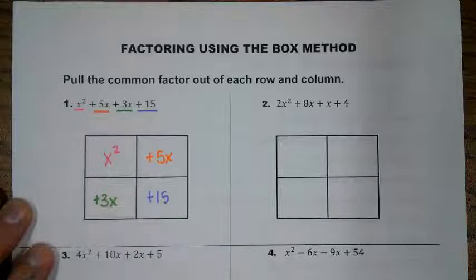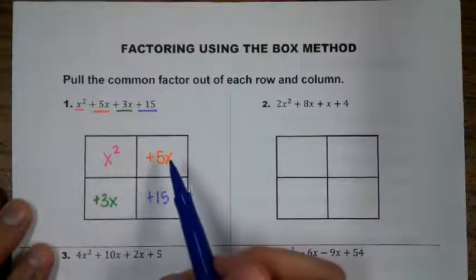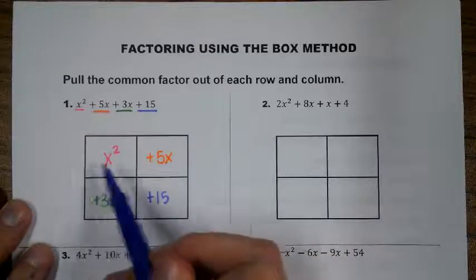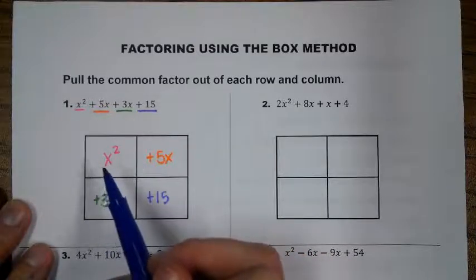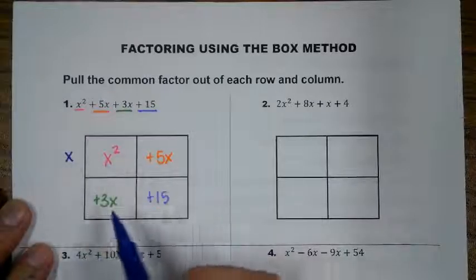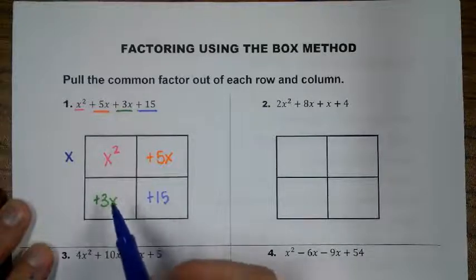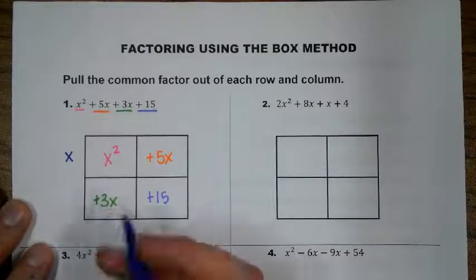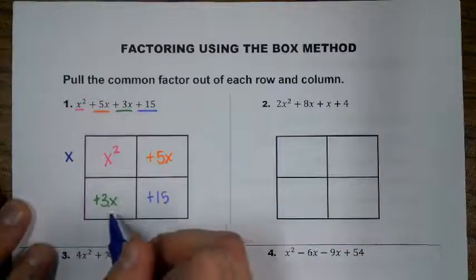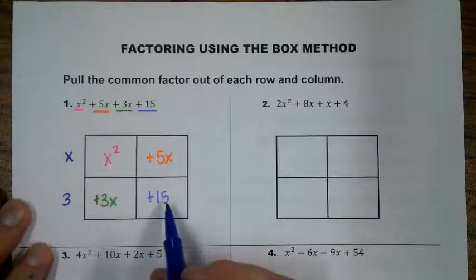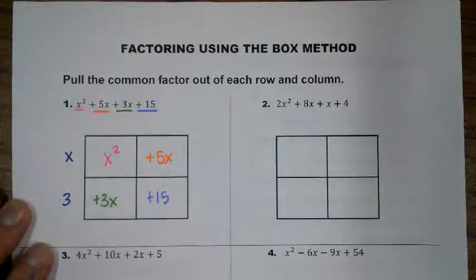Now we're going to pull our common factors out. Starting with the left side: what is the common factor between x squared and 5x? They don't have a common integer factor, but they do have a common variable factor, so we can pull out an x. Then we look at 3x and 15 — they don't both have an x, but we can pull a 3 out of both. So 3x divided by 3 gives us x, and 15 divided by 3 gives us 5.